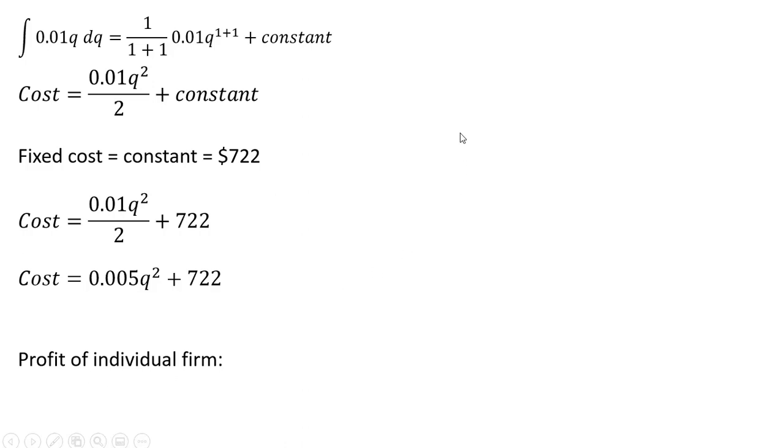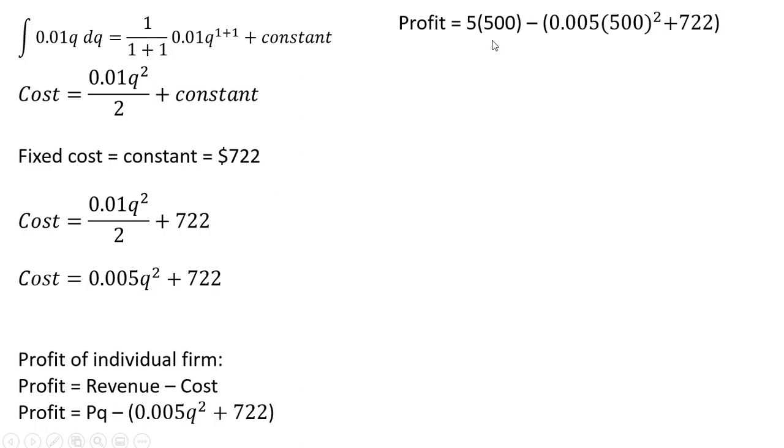So the profit for the individual firm is going to be revenue minus cost, where revenue is price times quantity, and we have our individual cost equation for the firm. And plugging in the $5 price for P, and the 500 units of output for lowercase q, and now simplifying, the firm's total profit is $528.